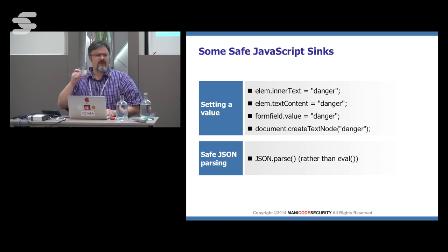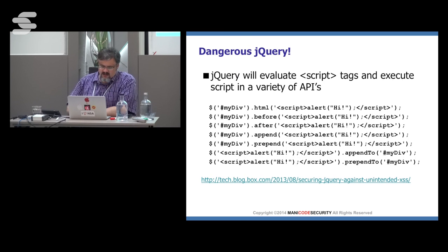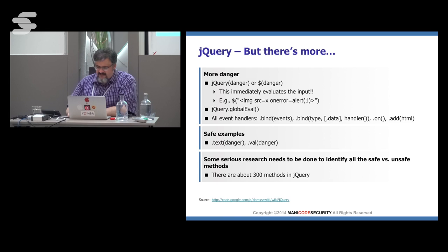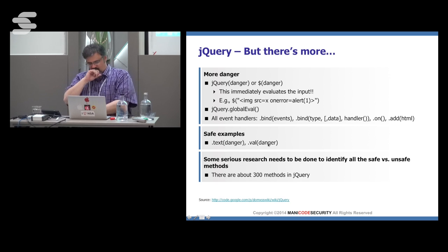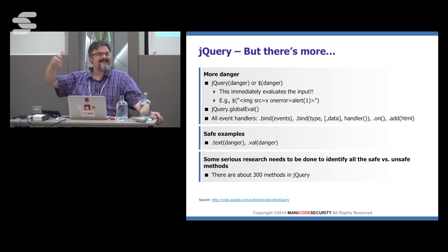What about jQuery? Is jQuery safe by default? Absolutely not. If I get untrusted data into .html(), .before(), .after(), .append(), .prepend(), or the raw jQuery call, these all lead to script execution. Pretty much all of these jQuery APIs are dangerous. When you want to safely populate the DOM with jQuery, there are only a couple safe examples: .text() and .val(). That's all you really need to dynamically populate pretty much any area within jQuery. It's not a lot of extra things you have to do — just use the safe stuff. It's not going to harm your ability to still provide rich functionality.